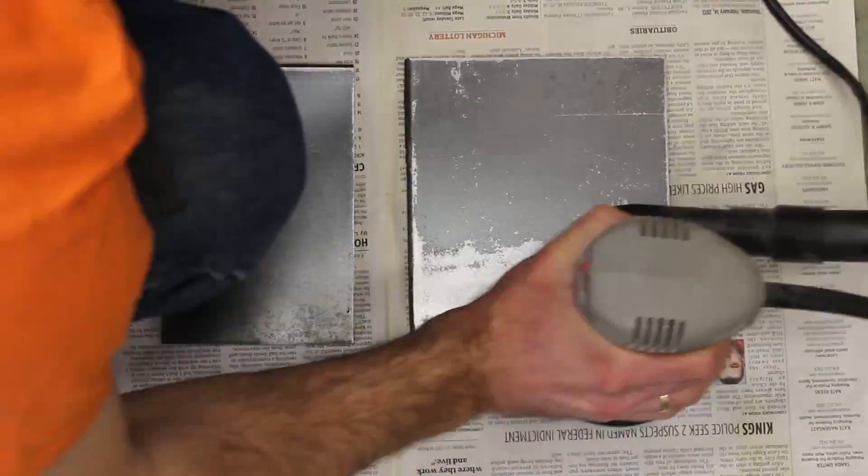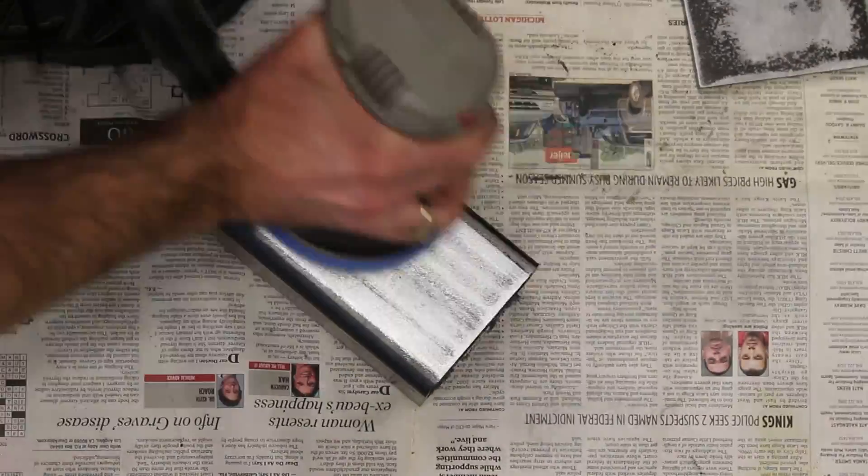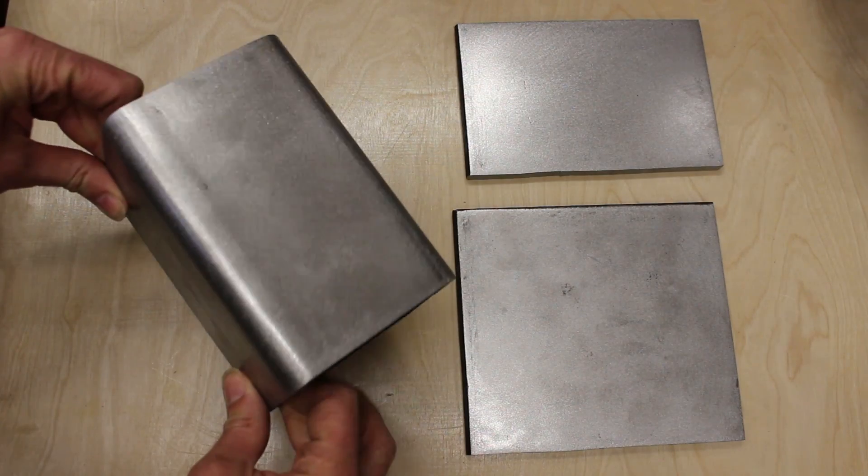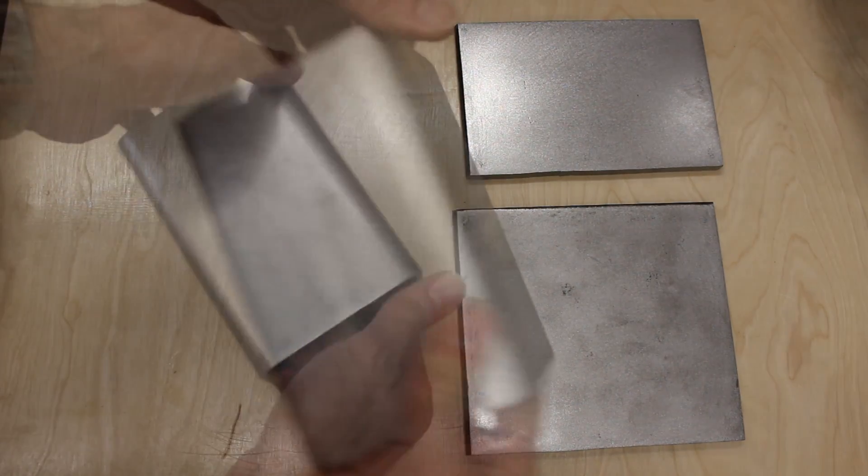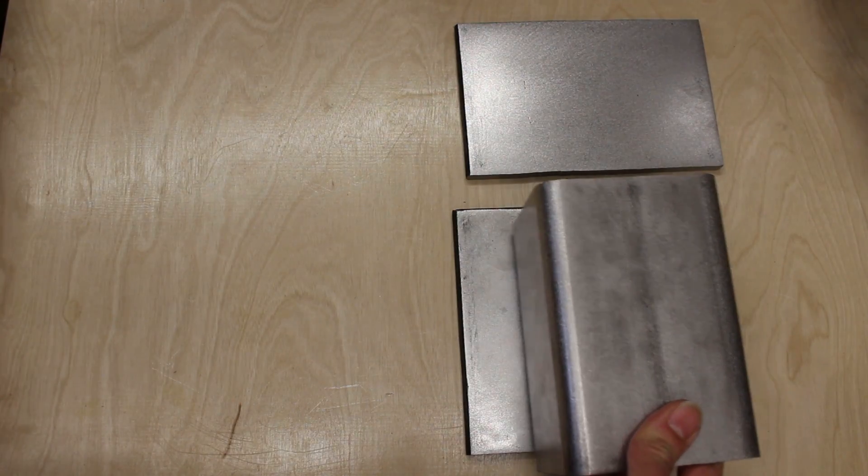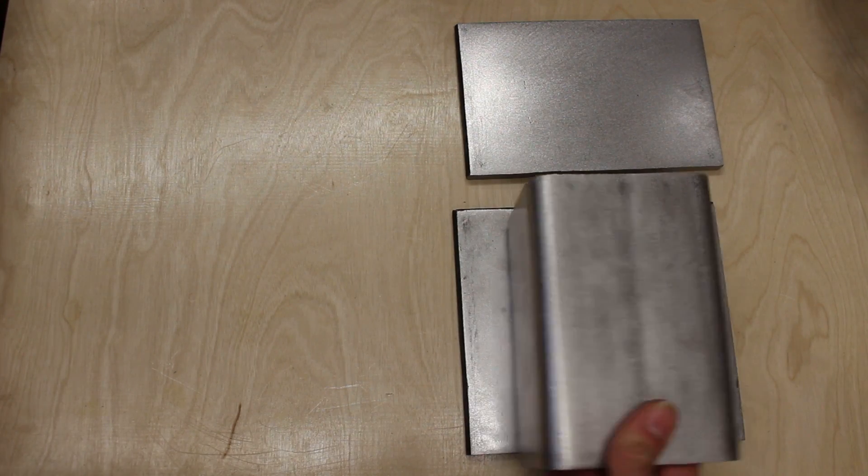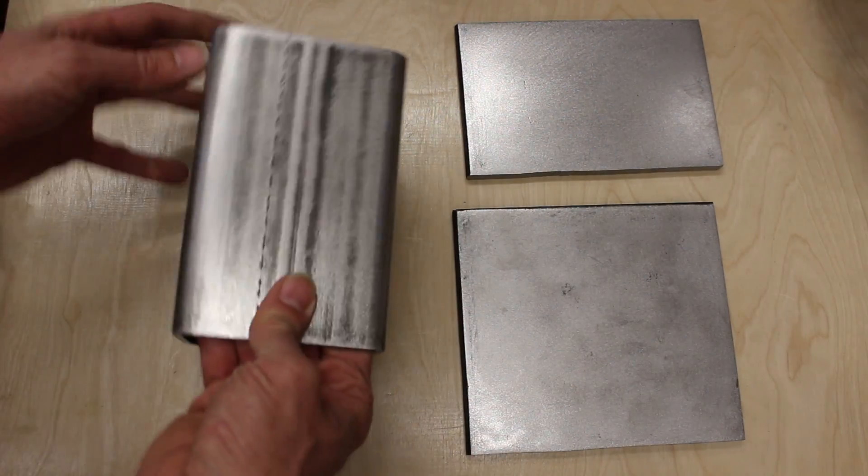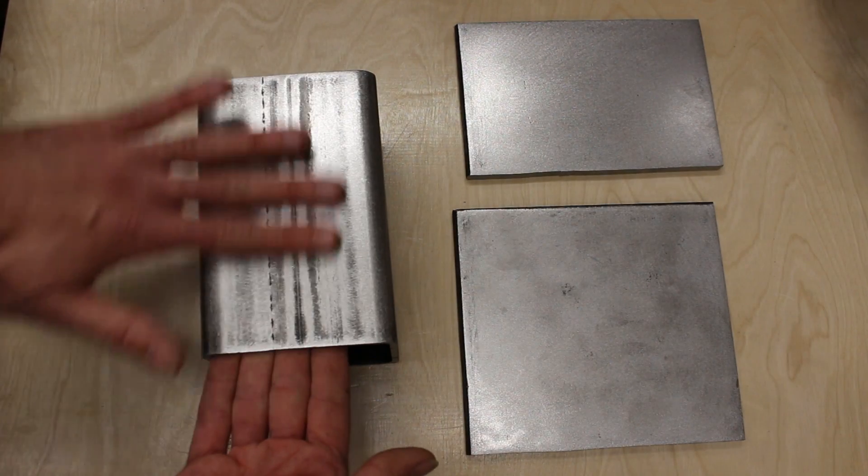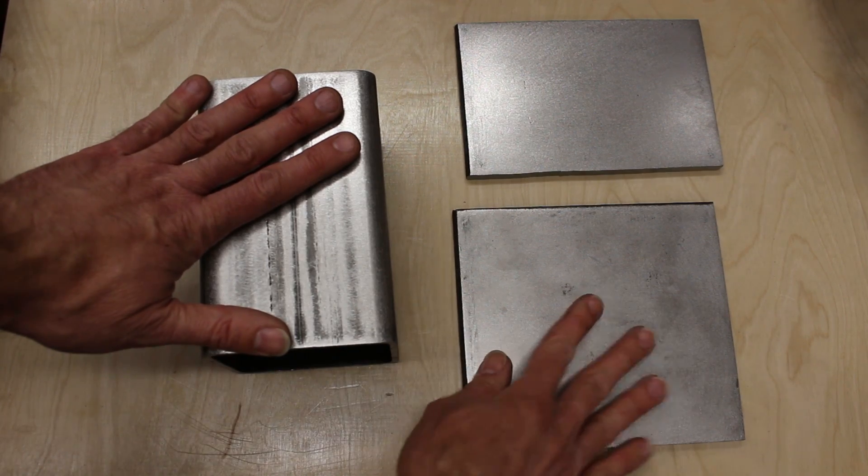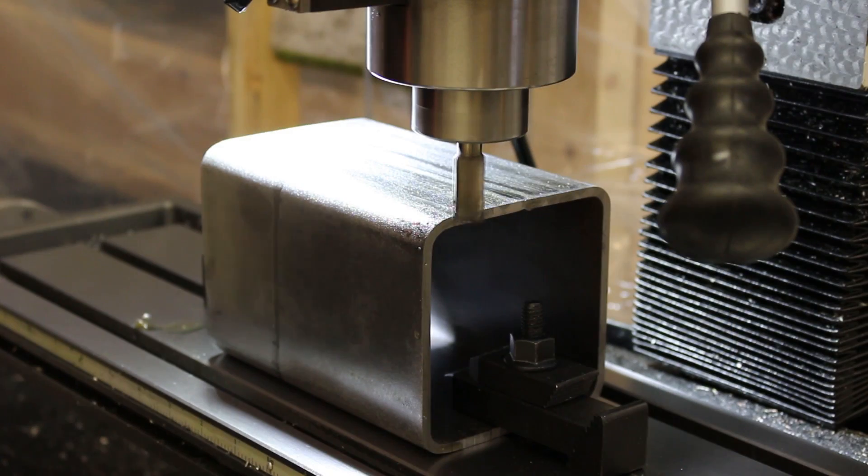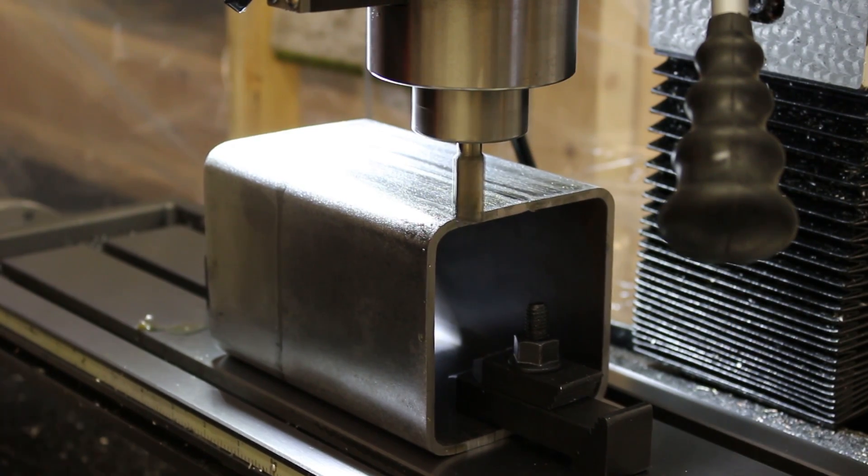I sanded off the mill scale from these three pieces of steel. They're looking nice and shiny now which will give me nice clean surfaces for welding. When I sit it on the base plate it rocks quite a bit, so I'm going to put it on the mill and mill this side flat just to give me a nice solid mating before I weld it up. I'm going to take a very light cut, just a few thousandths, as little as I can.